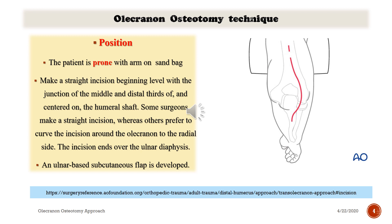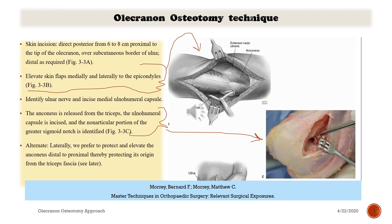Make a straight incision beginning at the level of the junction of the middle and distal thirds, centered over the humeral shaft. Some surgeons make a straight incision while others prefer a curved incision around the olecranon to the radial side, ending over the ulnar diaphysis. An ulnar-based subcutaneous flap is developed, and the ulnar nerve is carefully protected.